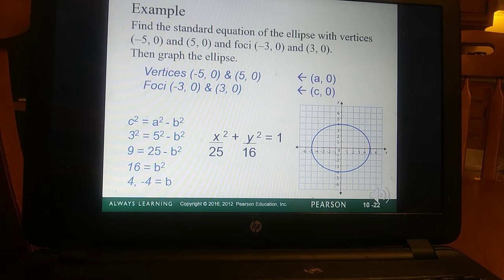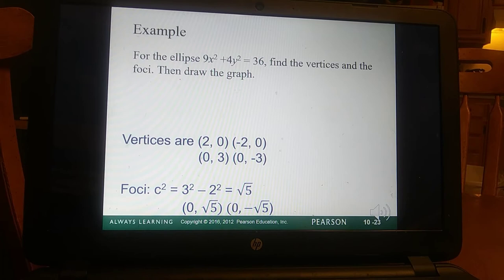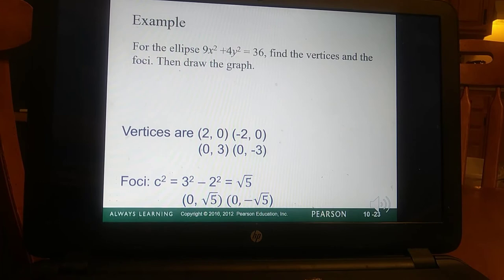Then we graph it, you can see how it's crossing through 5, negative 5 on the x-axis, 4, negative 4 on the y, centered at the origin. So for the ellipse, 9x squared plus 4y squared equals 36, find the vertices of foci, and then graph.